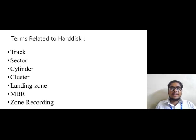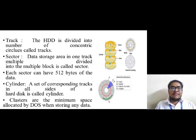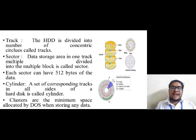Now let's discuss terms related to the hard disk drive: track, sector, cylinder, cluster, landing zone, MBR, and zone recording. The hard disk drive is divided into concentric circles called tracks. A data storage area where one track is divided into multiple blocks is called a sector; each sector can have 512 bytes of data. A set of corresponding tracks on all sides of a hard disk drive is called a cylinder. Clusters are the minimum space allocated by DOS when storing any data.